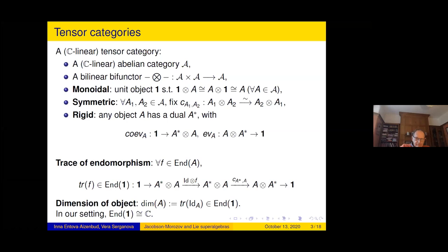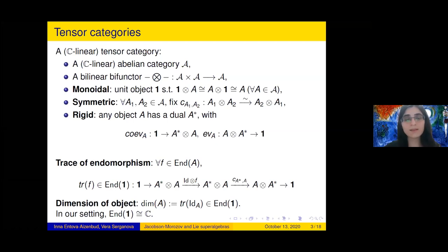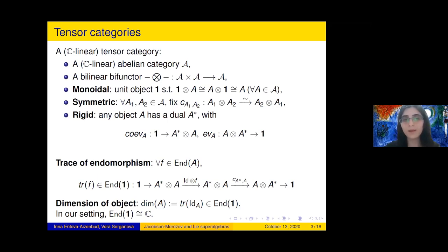I require my category to be symmetric, meaning I have a fixed isomorphism between the unit tensored with A and A, and isomorphisms between A1 ⊗ A2 and A2 ⊗ A1 — a flip. This symmetry is important additional data. The third requirement is that the category be rigid: every object has a dual, coming with fixed coevaluation and evaluation maps satisfying certain conditions.